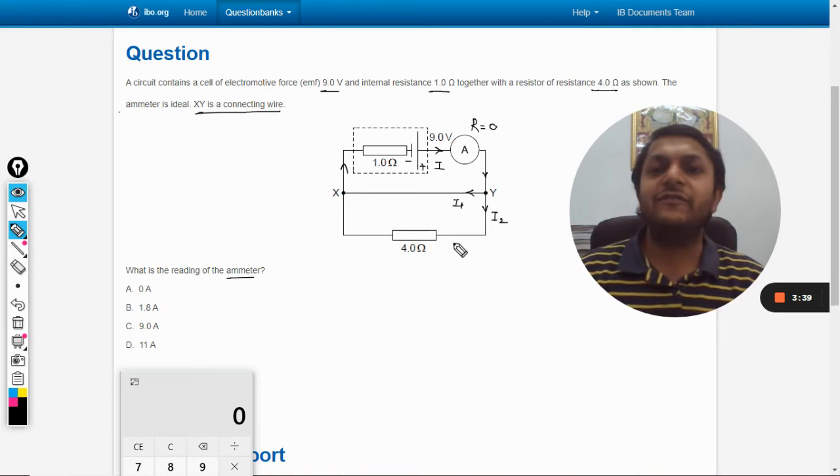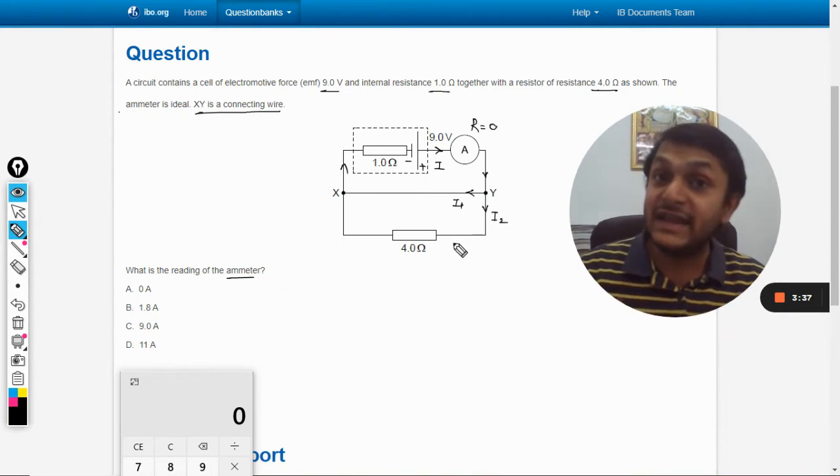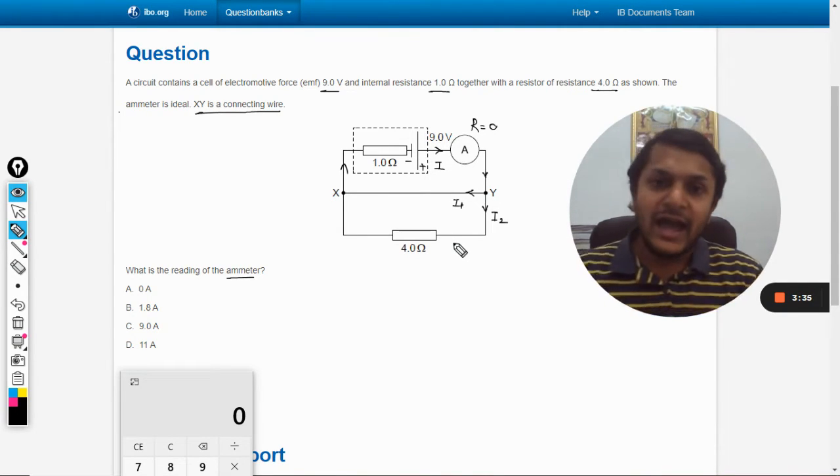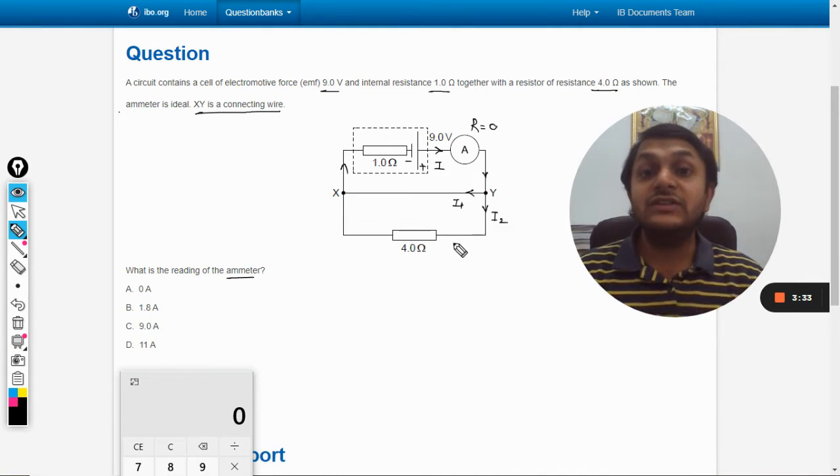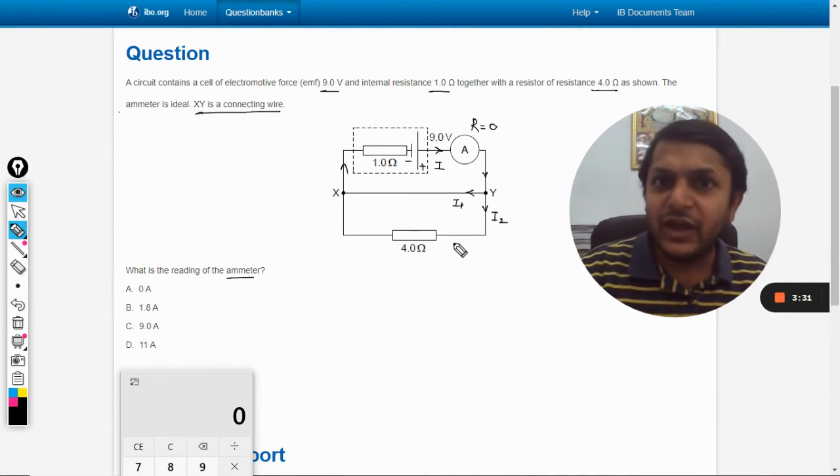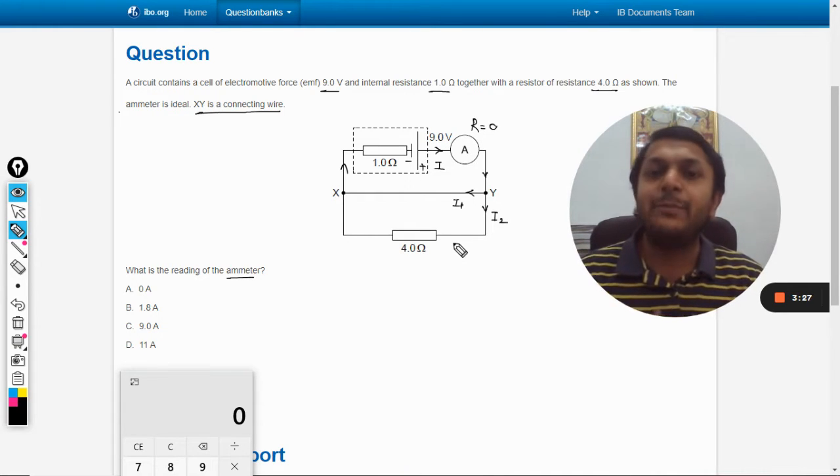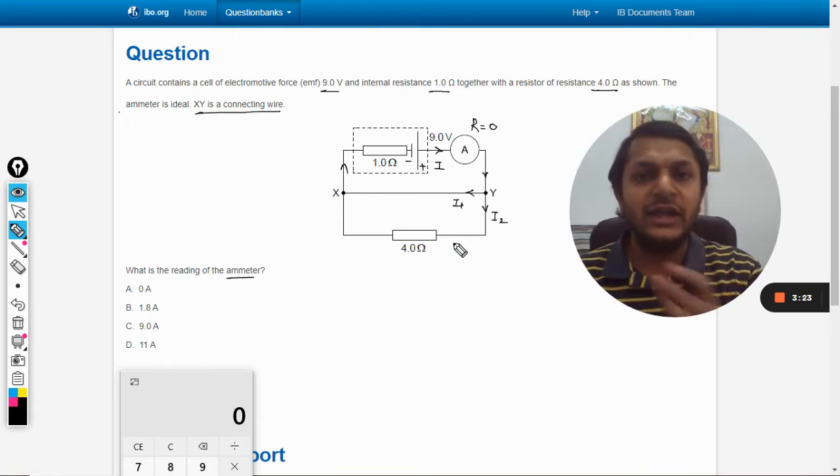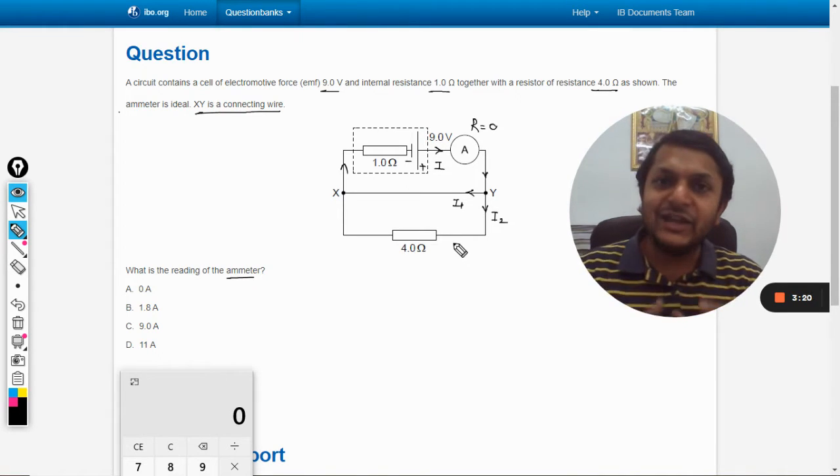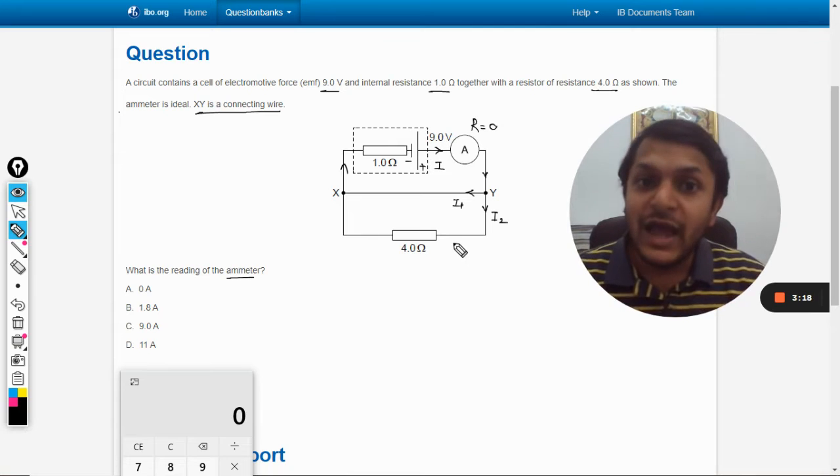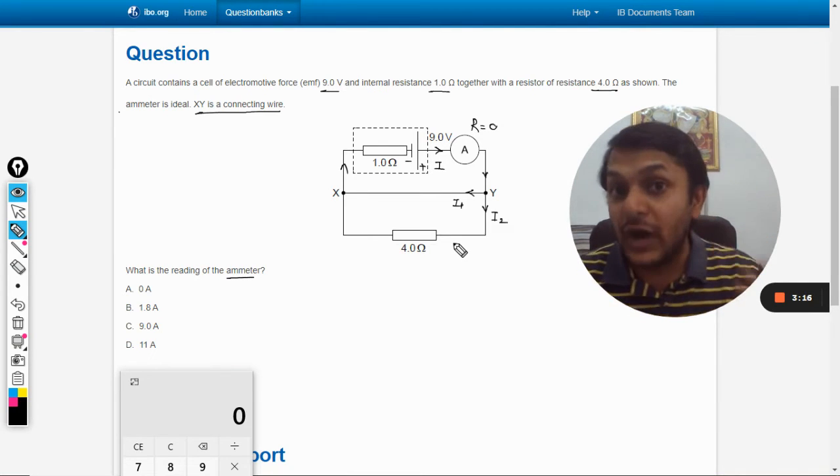In parallel connection, more current will flow from the branch which is having lesser resistance. And in this case, because the resistance of the XY wire is actually zero, the complete current will pass through XY and no current will go into 4 ohm resistance. It means i2 will come out to be equal to zero and i1 will be equal to i.